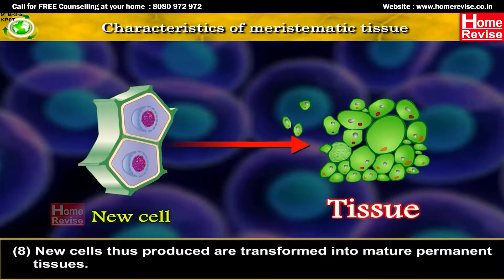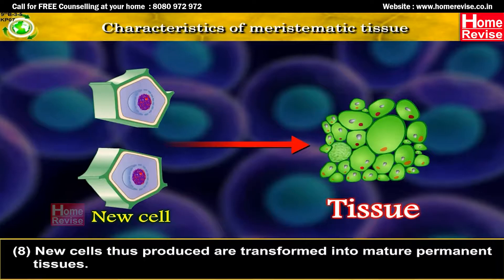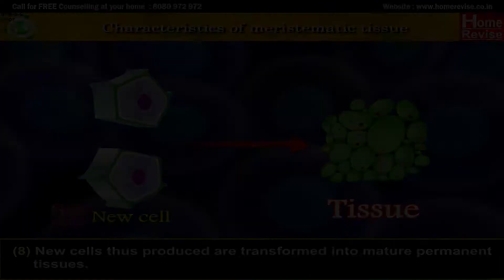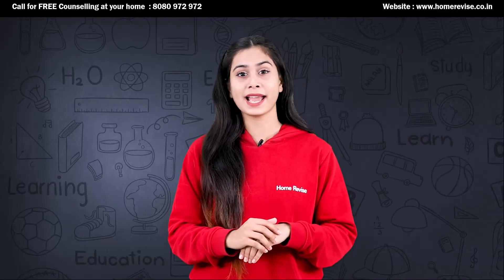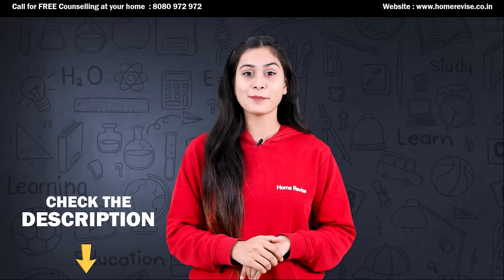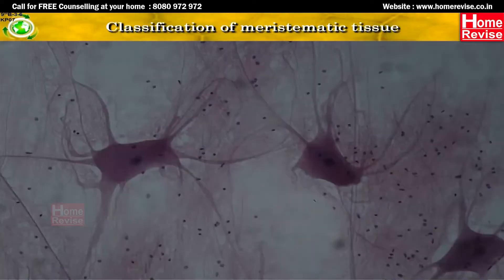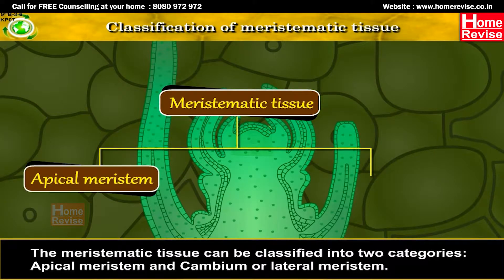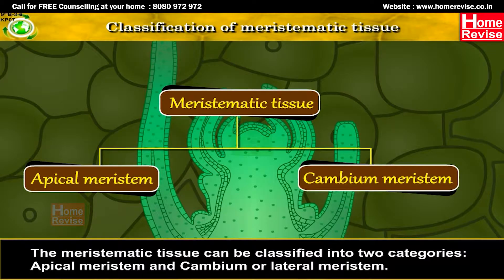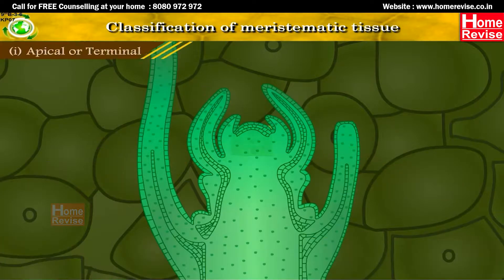New cells thus produced are transformed into mature permanent tissues. Meristematic tissue can be classified into two categories: apical meristem and cambium or lateral meristem.